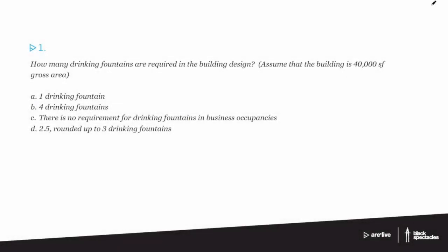Here's our first question. We're going to look at the first question and then jump to the tab information and go through that for a second, then come back and actually start trying to answer this question. The first question is: how many drinking fountains are required in the building design? Assume that the building is 40,000 square feet gross area. Right away you realize you need to go look at the information they've sent to figure out what to do next.